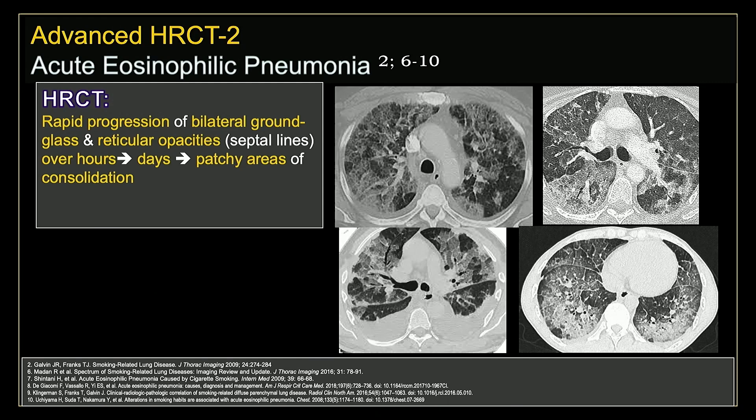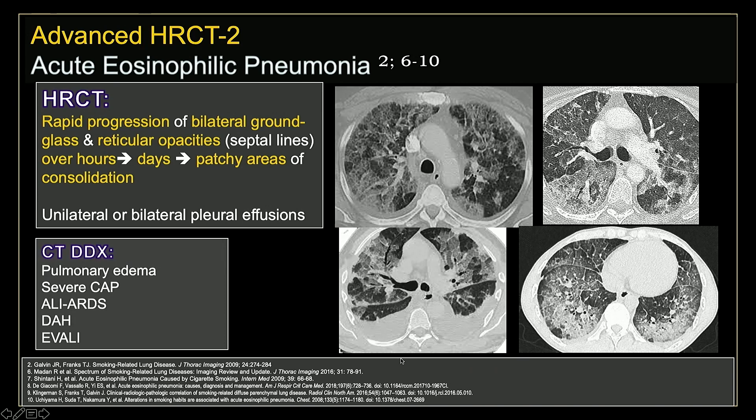These are four different patients with HRCT scans showing acute eosinophilic pneumonia. On HRCT imaging, we may expect to see rapid progression of bilateral ground-glass and reticular opacities progressing over hours to days to frank regions of consolidation. We may also see unilateral as well as bilateral pleural effusions. It looks a lot like pulmonary edema, and we also have to rule out things like community-acquired pneumonia, acute lung injury, ARDS, diffuse alveolar hemorrhage, and EVALI.